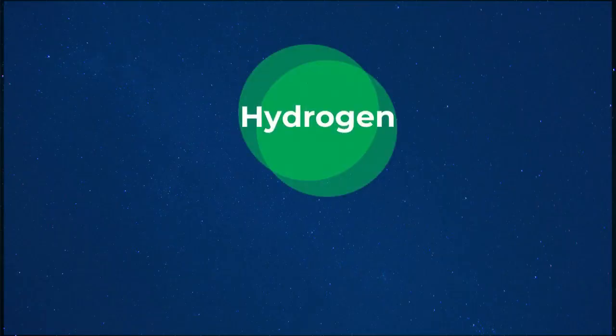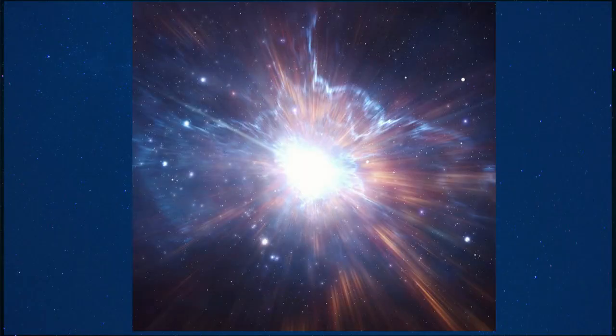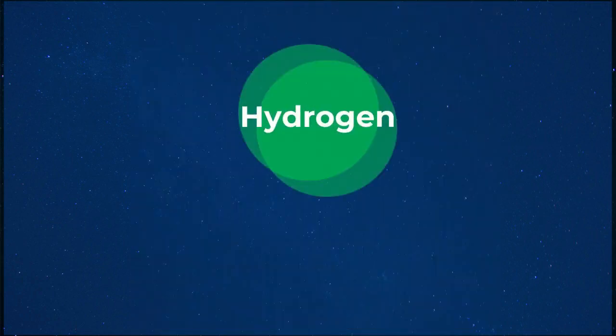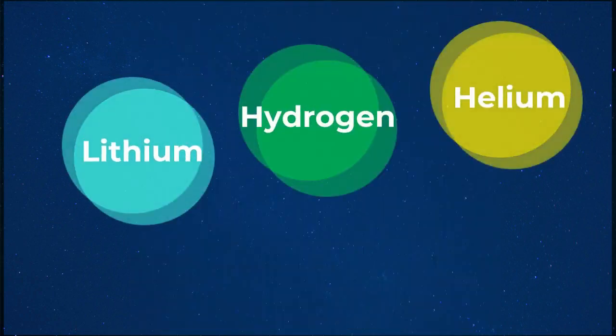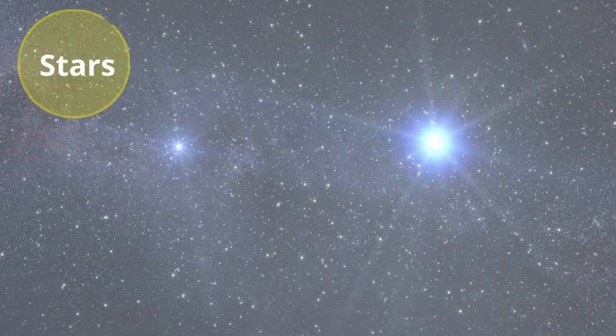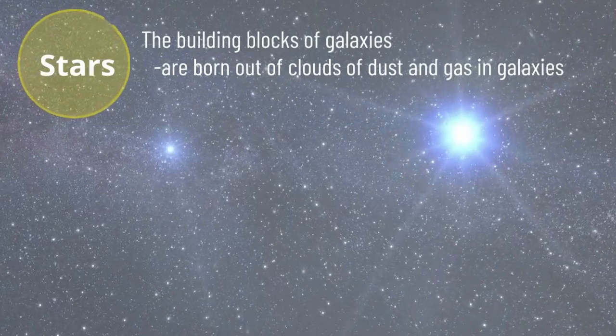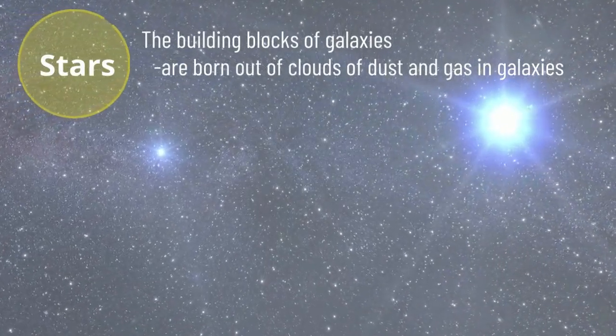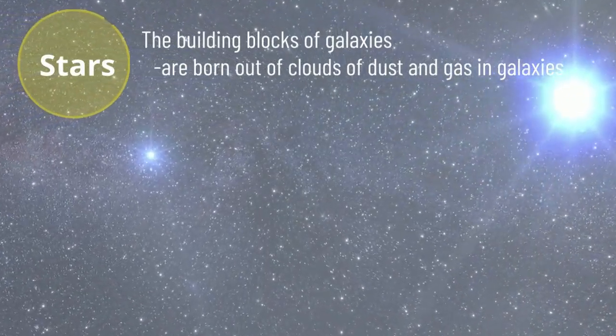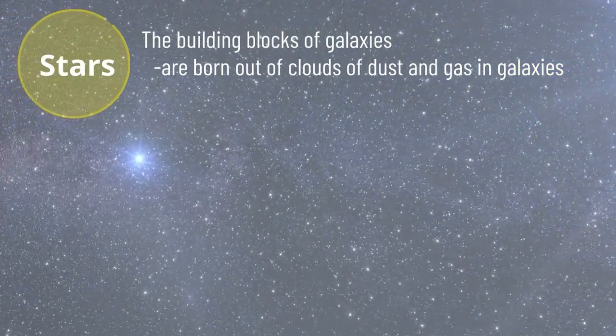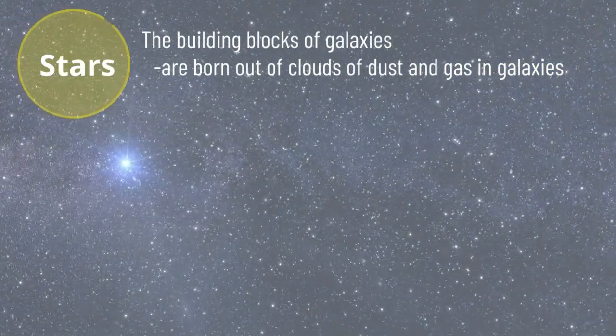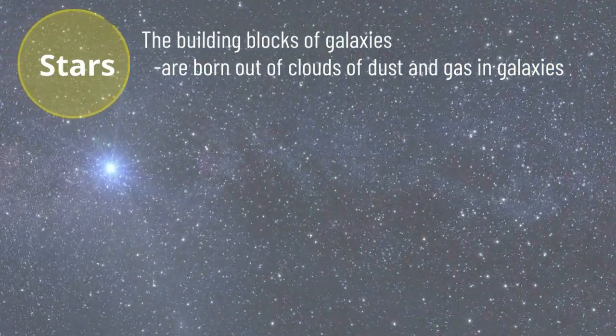Hydrogen is the most abundant element in the universe. According to big bang theory, the universe has expanded and later cooled to form subatomic particles in the simplest elements. Hydrogen along with some lithium and helium is the first element came to existence. Stars, the building blocks of galaxies which are born out of clouds of dust and gas in galaxies. Instability within the clouds eventually results into gravitational collapse, rotations speeding up and transform into a protostar.